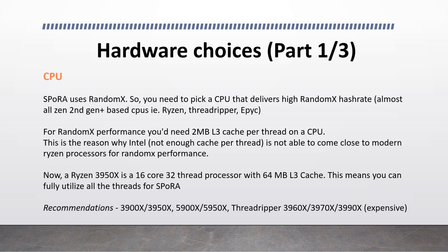Now let's look at some CPU hardware choices. CPU selection is very important and directly affects the SPORA hash rate. SPORA uses RandomX — for those not familiar, this is the same mining algorithm used by the popular crypto coin Monero. For RandomX, you need to pick a CPU that delivers a high RandomX hash rate. Almost all Zen 2nd gen and higher CPUs — such as the Ryzen series, the Threadripper series, or the EPYC series — favor the RandomX mining algorithm, because RandomX performance requires 2 megabytes of L3 cache per CPU thread. This is the reason why Intel cannot come close to modern Ryzen processors for RandomX performance — it doesn't have enough cache per thread on the majority of consumer-grade processors.